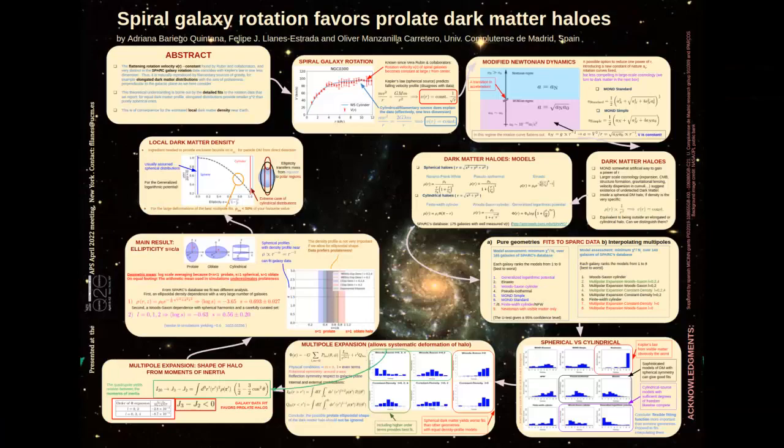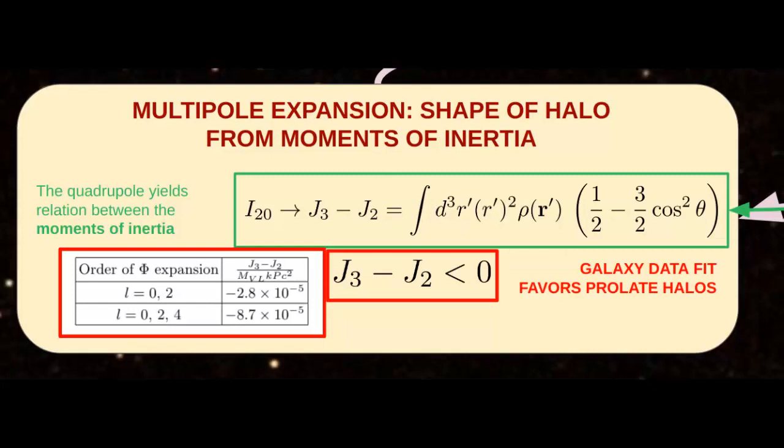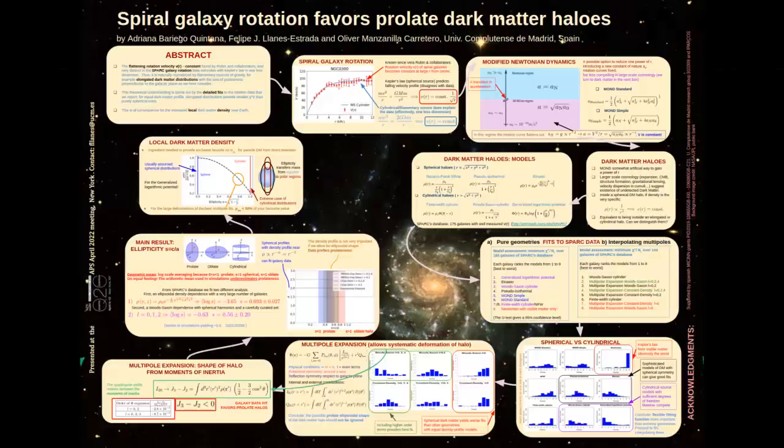With the spherical harmonic expansion at hand, we can decide whether the supposed dark matter halo is rather prolate or oblate. One way to qualitatively decide is to extract the difference between the principal moments of inertia. We extract a clearly negative value, implying that the halo tends to be prolate in most of the galaxies, in agreement with the various models above.